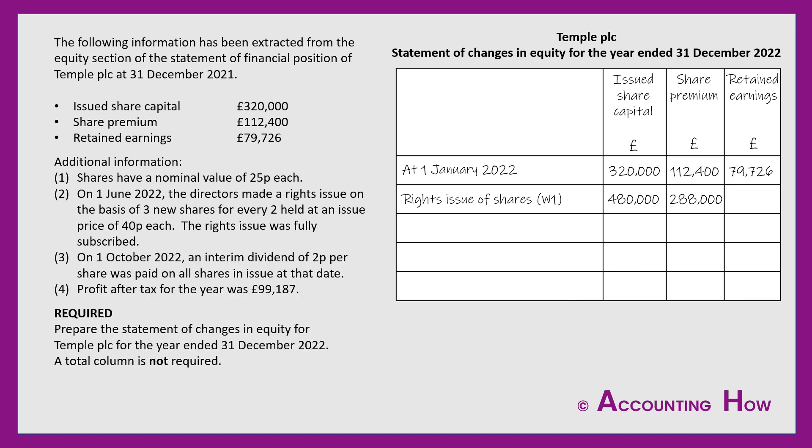The next item is the profit for the year. Point four states that profit after tax for the year was £99,187. It's important to use profit after tax — sometimes a question gives profit before tax and you need to subtract the tax figure. Profit after tax represents retained earnings if the company retains this profit, so this figure goes straight into the retained earnings column.